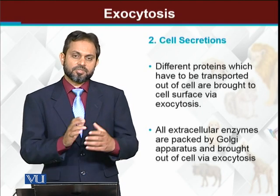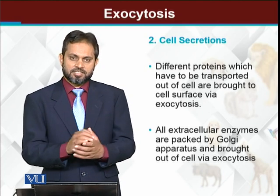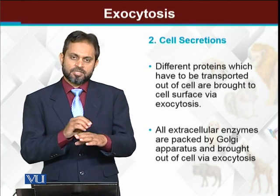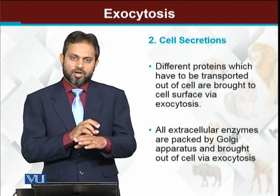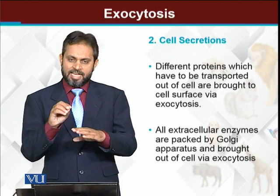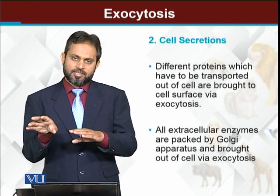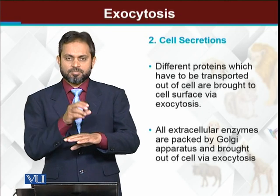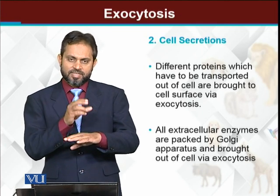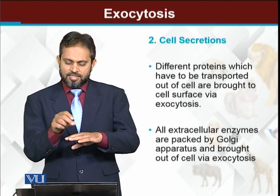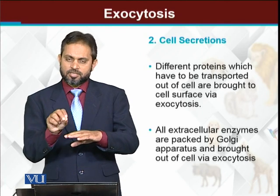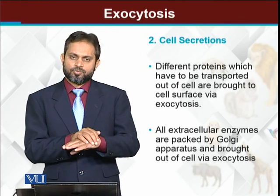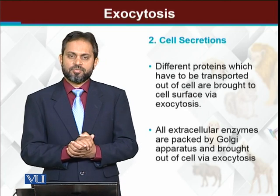Neurotransmitters are secretions that neurons release. Neurons release neurotransmitters at the axon endings. The neurotransmitter is made in the cell body of the neuron, then packed into a vesicle, transported to the axon, and after reaching the axon terminal it is released outside the cell.